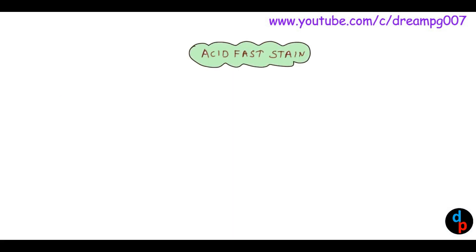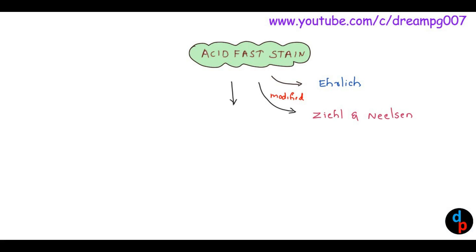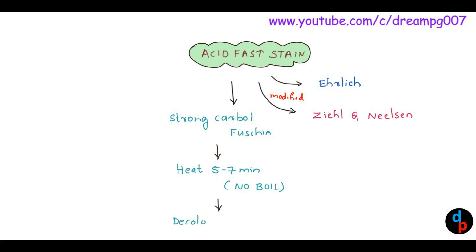Let's have a look into acid-fast staining as well. It was discovered by Ehrlich and later modified by Ziehl-Neelsen. First, the slide is stained with strong carbol fuchsin. Later the slide is heated for about 5 to 7 minutes — care must be taken not to boil the slide. After that, it is decolorized with 20% sulphuric acid and later with 95% ethanol.